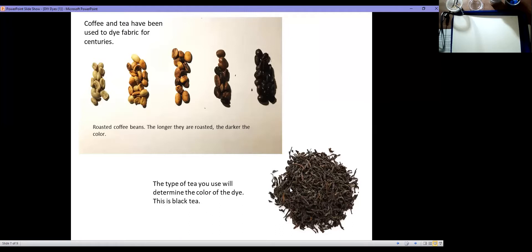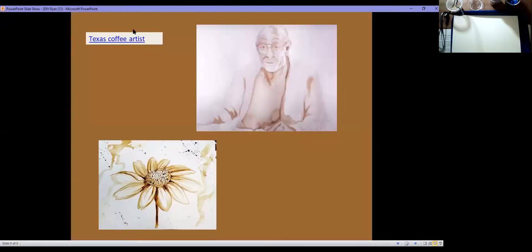Actually, people started dyeing with tea in order to hide stains on the tablecloth. Because people were drinking their coffee and tea and putting their cups down and then they were staining the cloth. And so they would just dye it in order to hide those stains. But there are some artists today who also like to paint with coffee. And this is an example of one artist I'm going to show you.